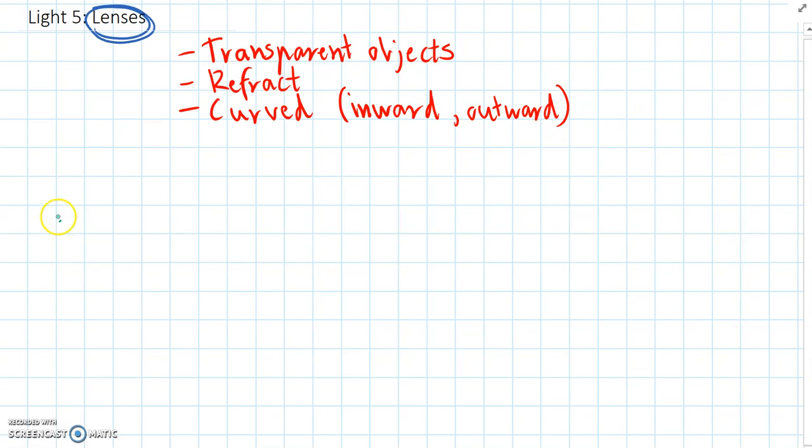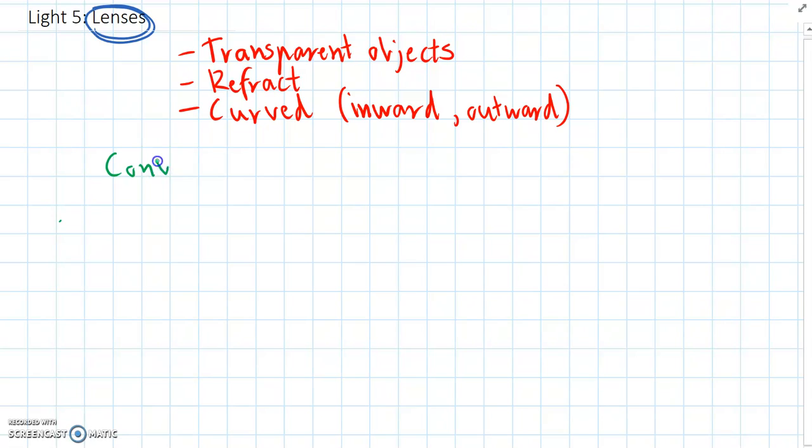The first one is a convex lens and the second one is concave. So convex lenses are curved outward. So this is a cross section of the lens and it might be made of plastic or glass.